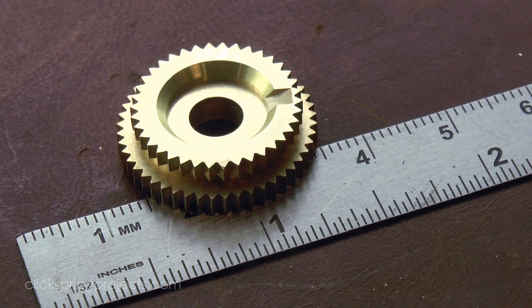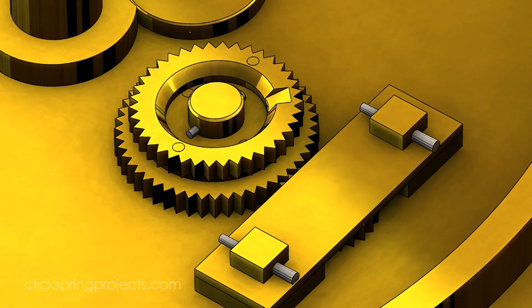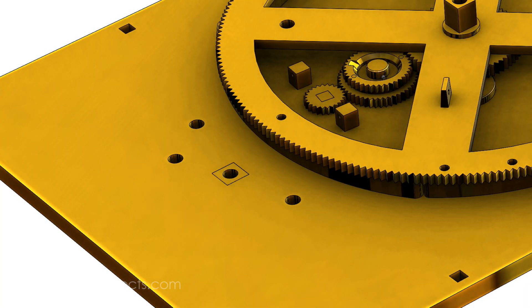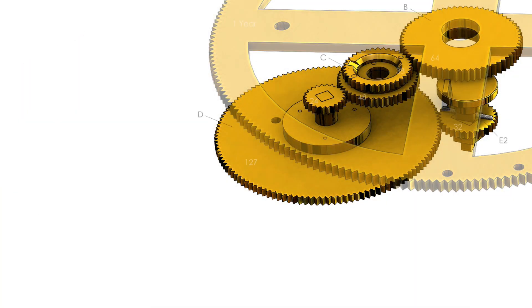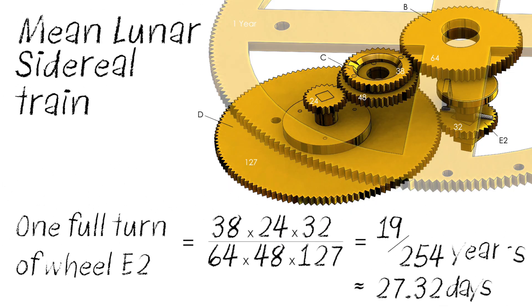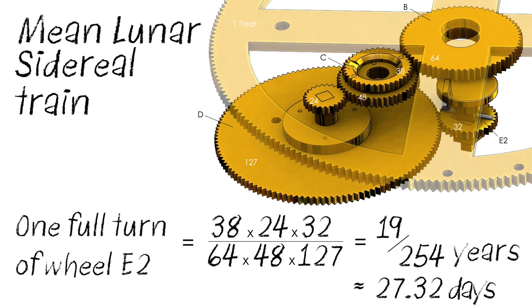It's perhaps the most remarkable aspect of the device that such subtle observations were mechanically represented within its gearing. And it began with the calculation of the mean lunar sidereal month. As a further resonance of the metonic cycle, it so happens that 254 sidereal months also almost exactly equals 19 solar years. So much like the metonic gearing, the sidereal period of the moon can be given a convenient mathematical expression.